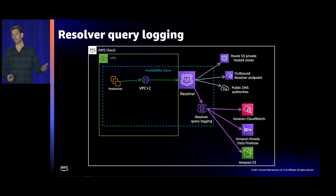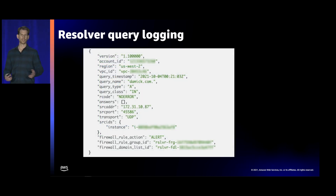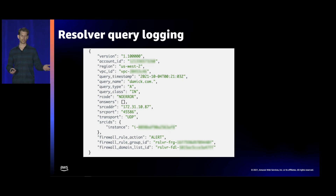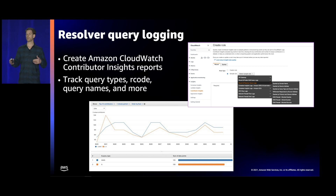You can direct query logs to S3, CloudWatch, or Kinesis Data Firehose, whichever outlet you choose, so you can run analytics on them. Looking at a sample resolver query log in JSON — in CloudWatch for example — you can see the query name (such as damik.com), the query type (A record), the response IP address, and the instance that made the query. You can couple this with CloudWatch Contributor Insights using sample rules to generate dashboards tracking query types and result codes.